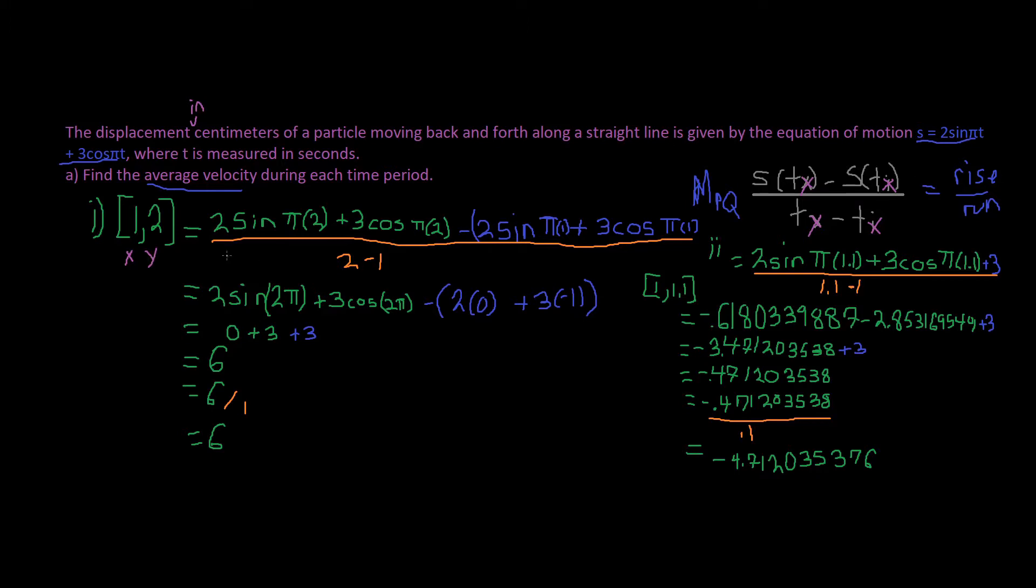2 sine pi t, 2 sine pi t, which is 2 right here. This is y, remember? And this is it. So 2 plus 3 cosine pi 2 minus 2 sine pi 1 plus 3 cosine pi 1.